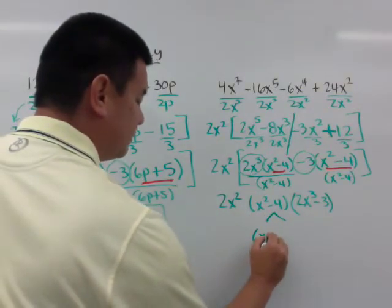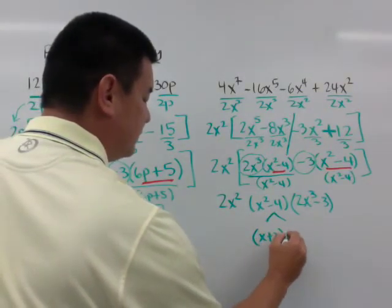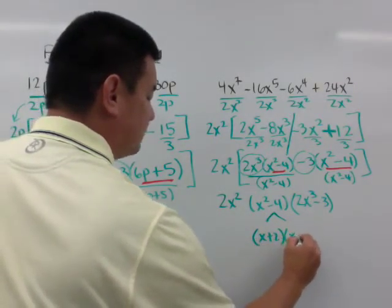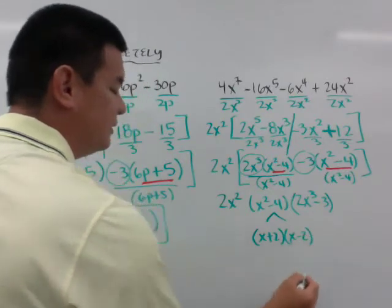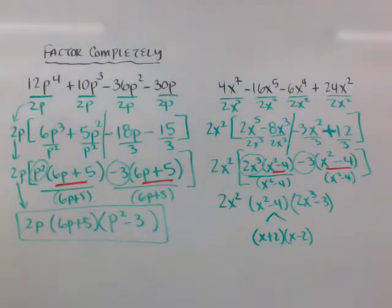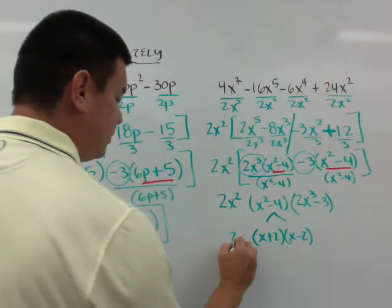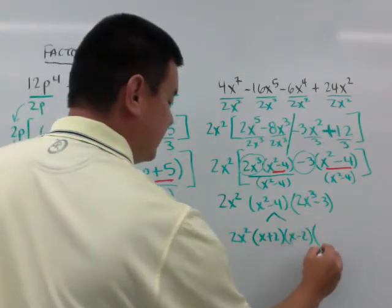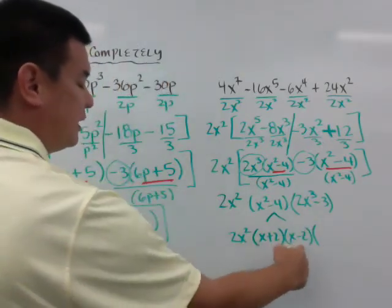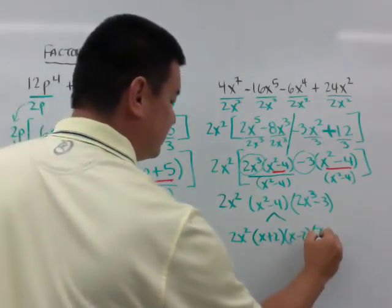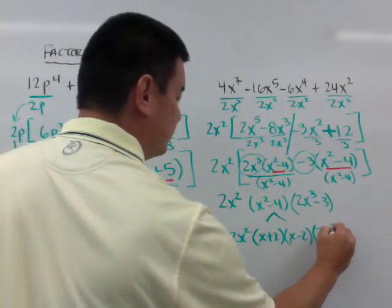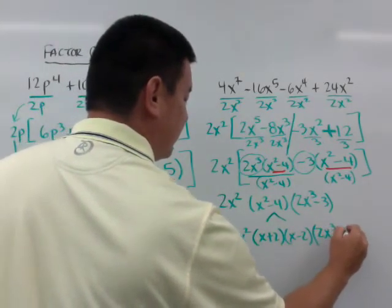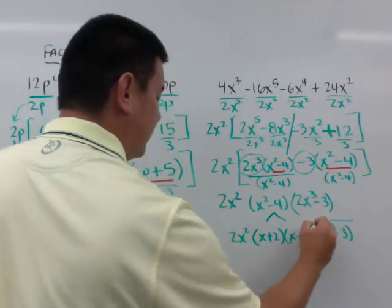This becomes x plus 2 times x minus 2. So your answer actually would be 2x squared times x plus 2 times x minus 2 times 2x cubed minus 3.